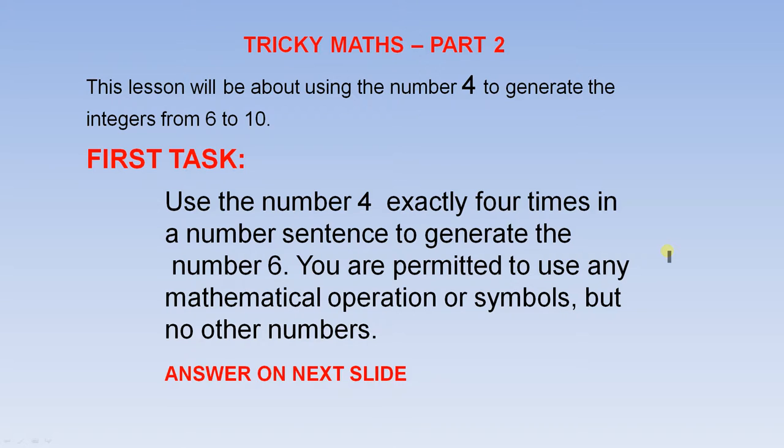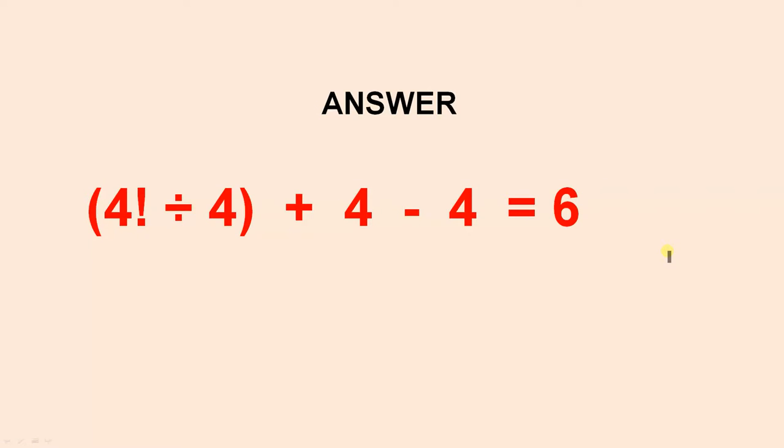This is a very, very tricky one, because it involves a very special operation. Now, here's the answer. 4 factorial divided by 4.